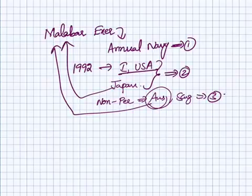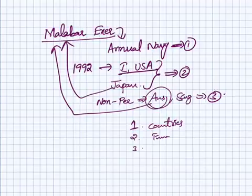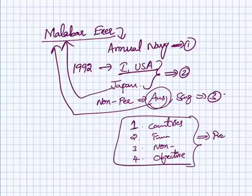For any joint exercises — army or naval — we should remember: what countries are involved, for how many years it has run, when it is conducted, who the non-permanent members are, and what the objective behind that particular joint exercise is. These four points are very important for prelims.